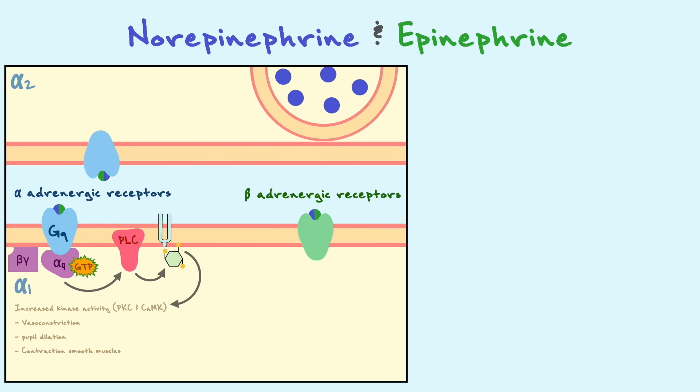On the other hand, alpha-2 is a Gi coupled receptor that is usually expressed presynaptically on norepinephrine terminals. The activation of these receptors leads to the activation of potassium channels by the dissociation of the beta and gamma subunit. Potassium channels opening causes potassium ions to leave the cell and thus causes a hyperpolarization. Since neurotransmitter release is dependent on calcium entry and calcium entry is dependent on voltage, the hyperpolarization caused by potassium channels reduces calcium entry and norepinephrine release. It is noteworthy to mention that alpha-2 receptors can be found in the brain and their activation causes sedation.